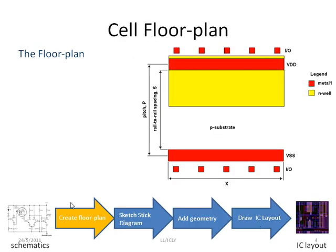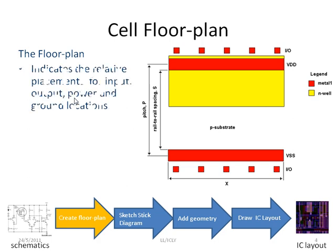Floor plan — that was the first step. In the floor plan, you are indicating the relative placement of the input, output and power and ground locations. You have your IOs or input and output points. So your signals will either come in here and go out there and vice versa. So your floor plan indicates the relative input and output locations.